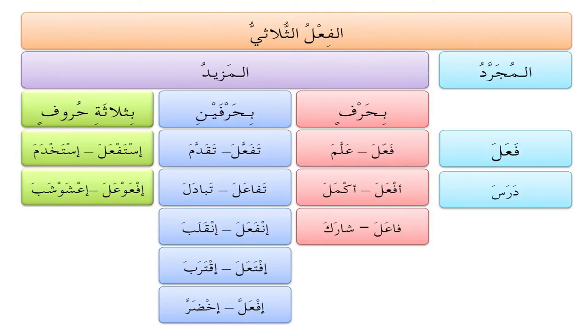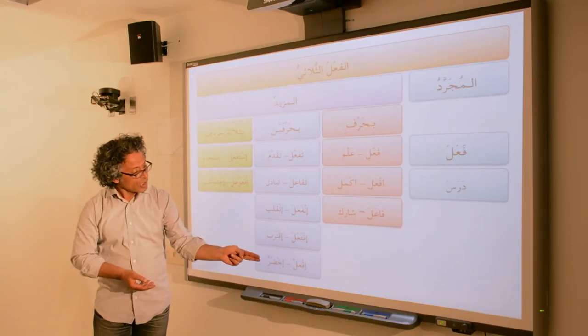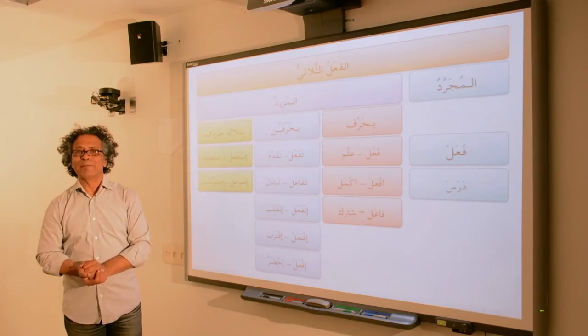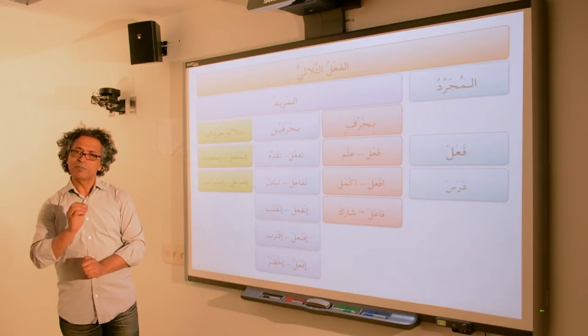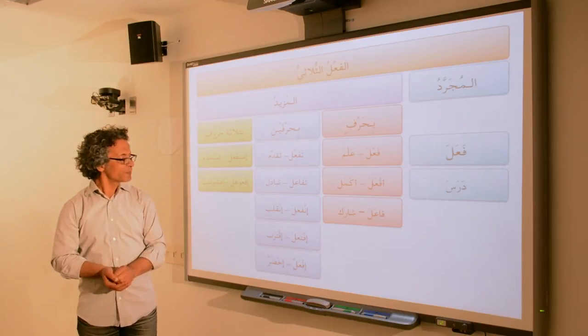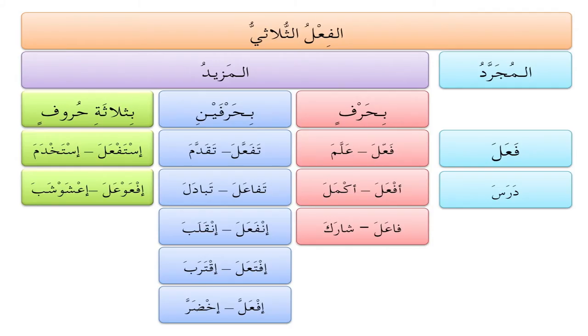افتَعَلَ — notice the addition here is the hamza, the alif, and the ta' before the 'ayn — like in اقتَرَبَ, where the root is ق-ر-ب and everything else is additional. Another form is افعَلَّ, which is very specific and restricted in its use, like اخضَرَّ, meaning to become lush or green.